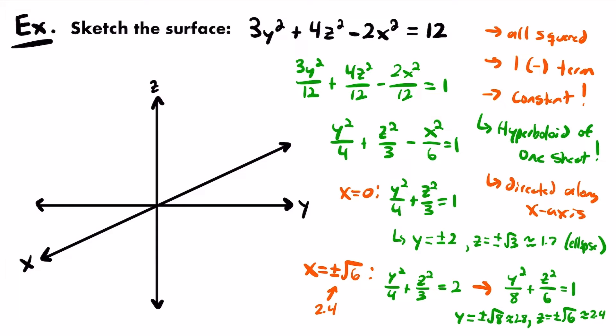Let's draw the trace at x = 0 directly in the yz-plane. Our y-intercepts are ±2 and z-intercepts are ±1.7 (±√3). Label those values and draw the ellipse by connecting those intercepts. We'll have our first ellipse in the yz-plane.